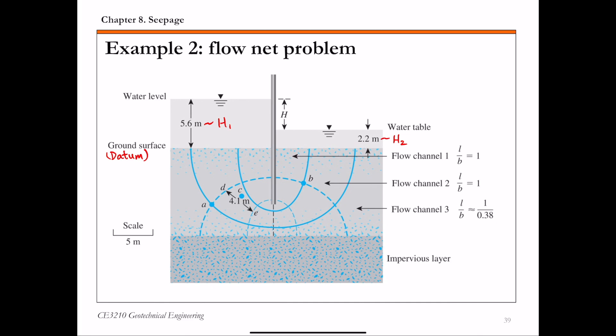For each flow channel, we have the ratio of length to width, L over B, for the flow element in that channel. Flow channels 1 and 2 have approximately square elements, so L over B equals 1. Channel 3 has rectangular elements, so L over B is not 1 — it's 1 over 0.38. There is an impermeable layer underneath the permeable soil.